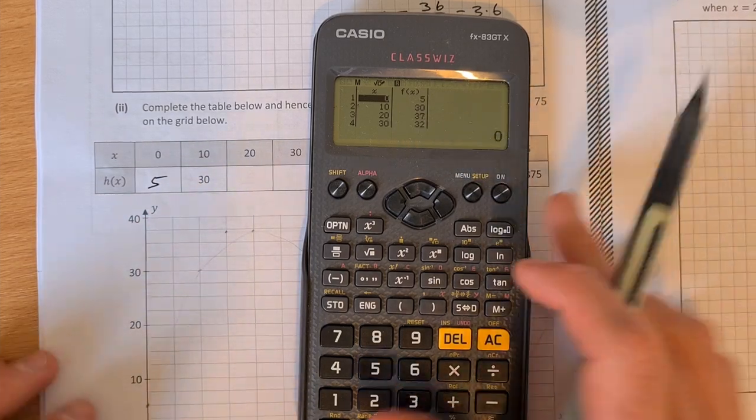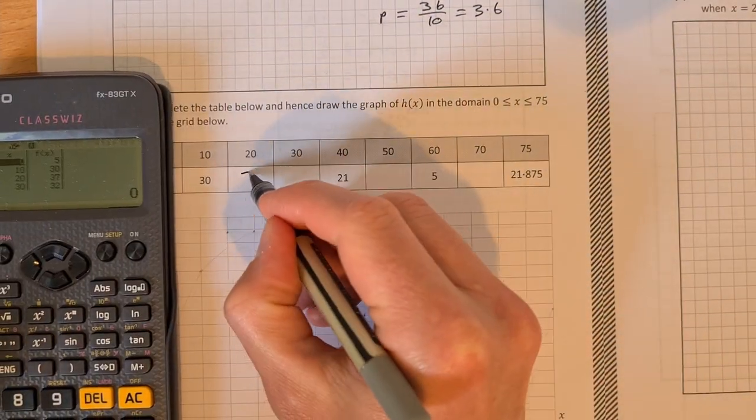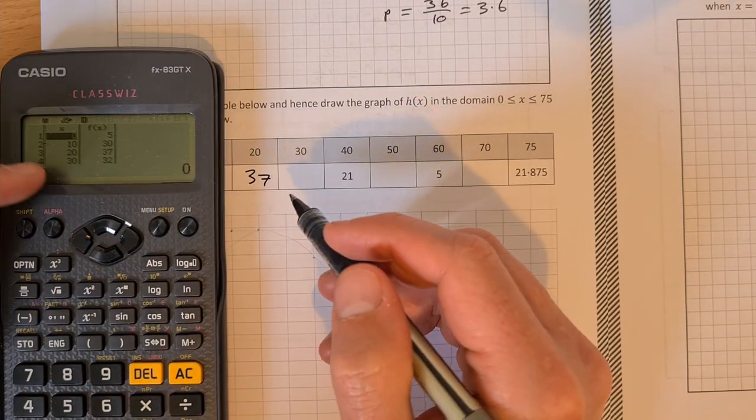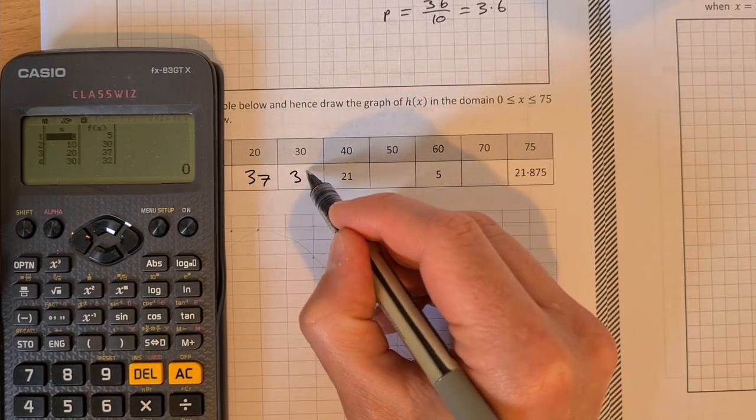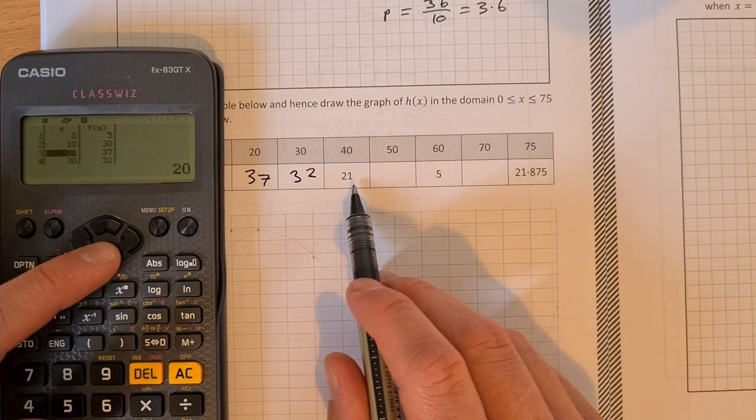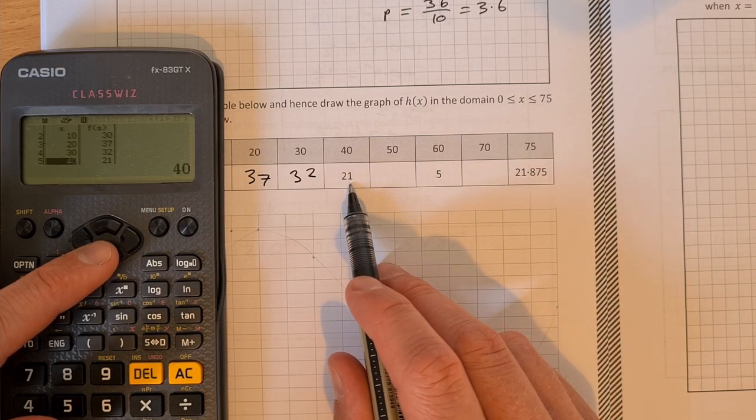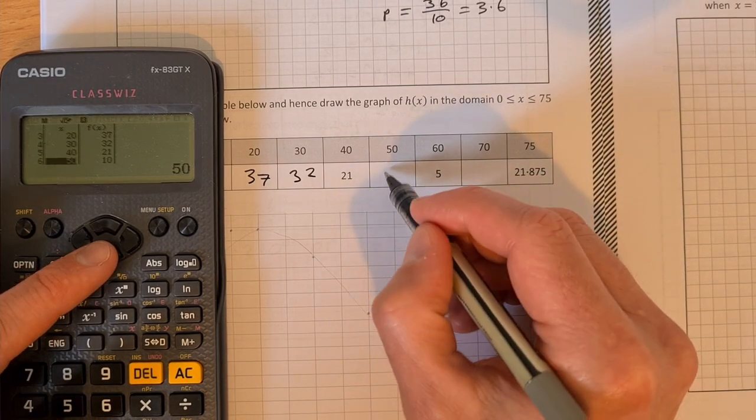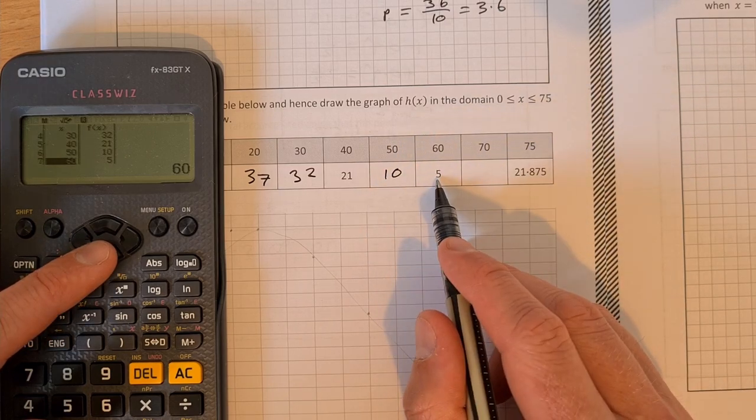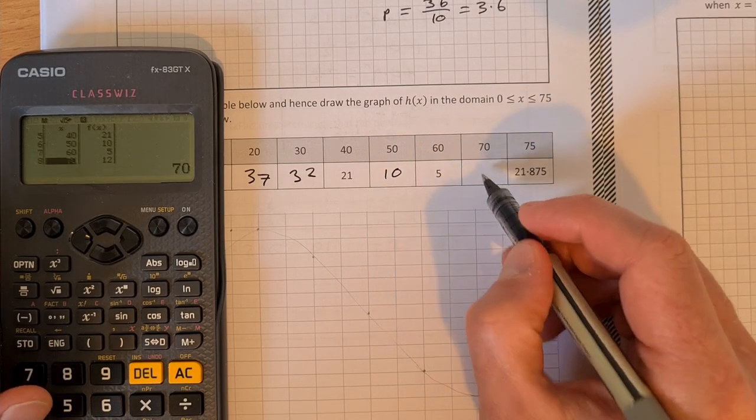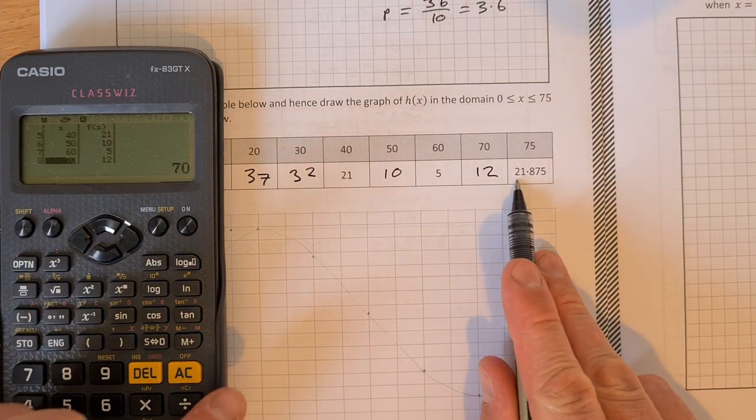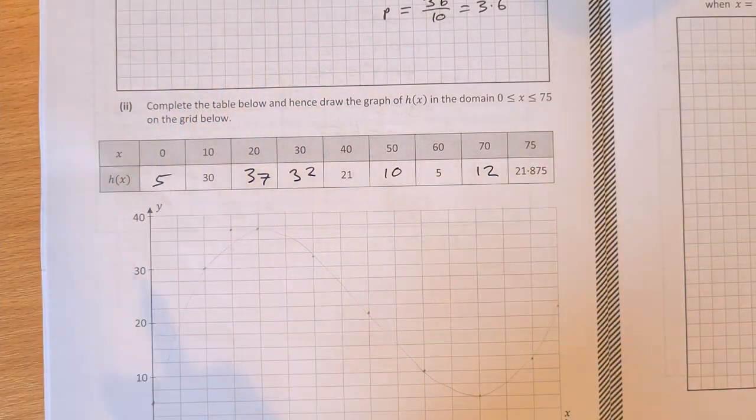Then we have 10 and 30, which is there. Then we have 20 and 37. Then we have 30 and 32. We can scroll down. We have 40 and 21, that's already there. We have 50 and 10. 60 and 5 should be there, it is. And then 70 and 12 is our last one. And then for 75, it's already done.